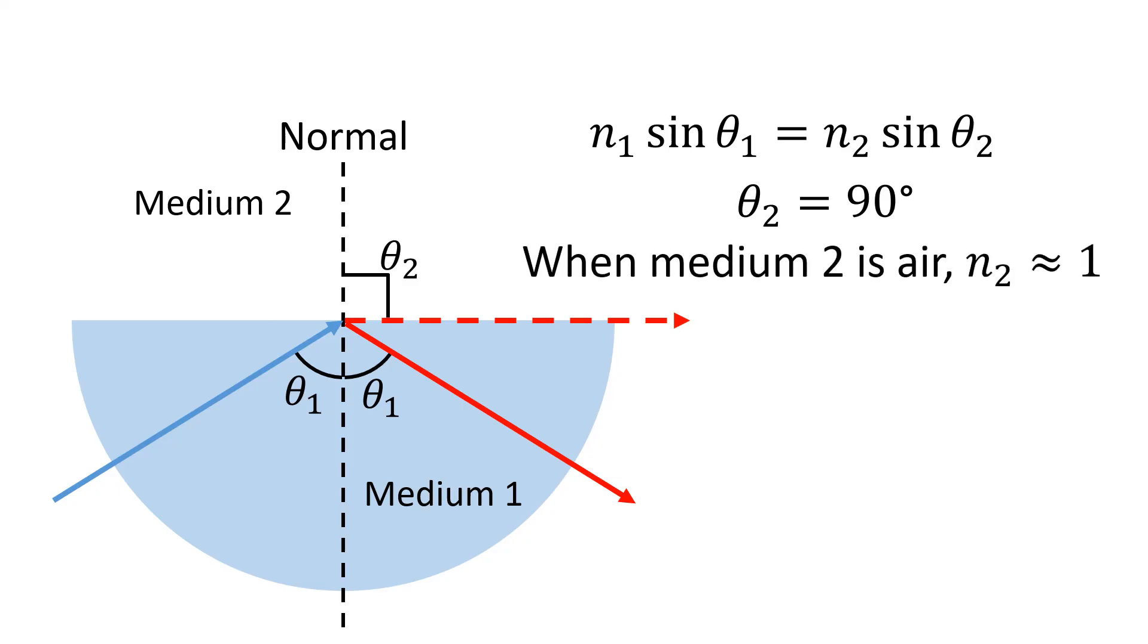If we put those values in, we get n₁ sin θ₁ = 1 × sin 90. Now sin 90 is 1. And so overall, we get n₁ sin θ₁ = 1.